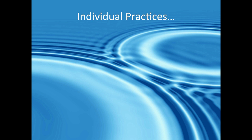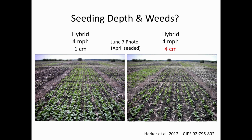Individual practices: this graphic suggests that when you combine individual practices you can create something bigger than just one. This isn't an obvious wild oat management picture, but on the left you have a canola hybrid planted at one centimeter, on the right at four centimeters. The differences in emergence can necessitate a herbicide application that's not necessary on the left but is necessary on the right—applying unnecessary selection pressure for resistance. So just seeding depth can be an important practice.